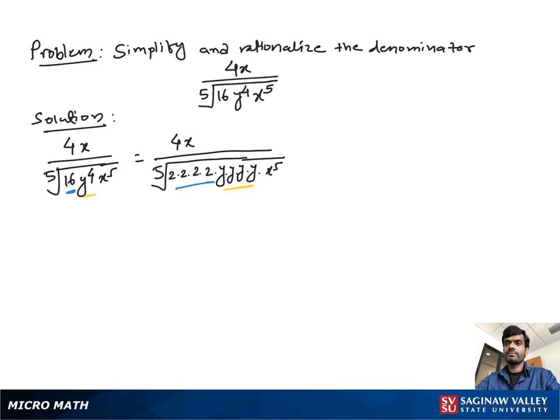To make the denominator a rational number, we need to remove the 5th root. To make a perfect 5th root in the denominator, we need 5 factors of 2, 5 factors of y, and 5 factors of x. We already have 5 factors of x, but we need one more factor of 2 and one more factor of y.